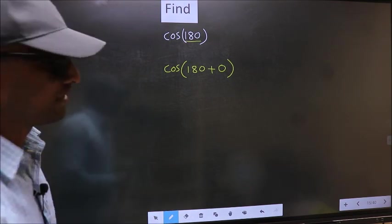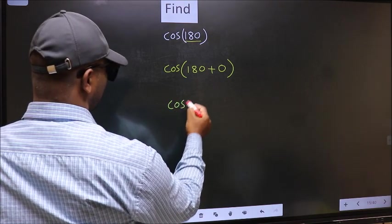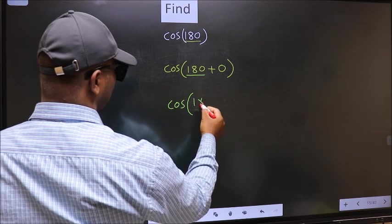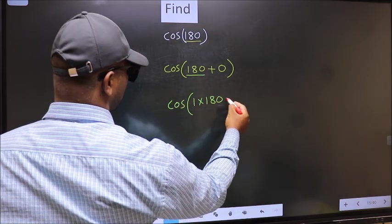Next, cos. In place of 180, we should write 1 times 180 plus 0.